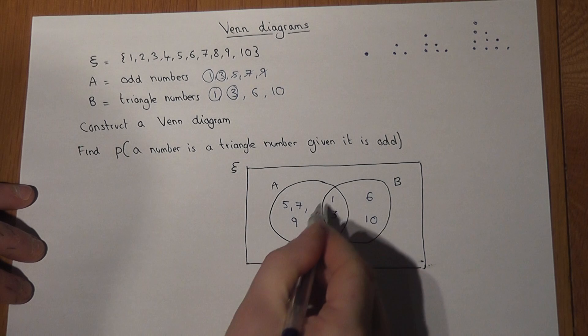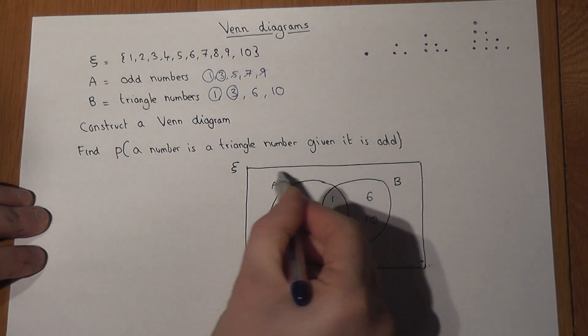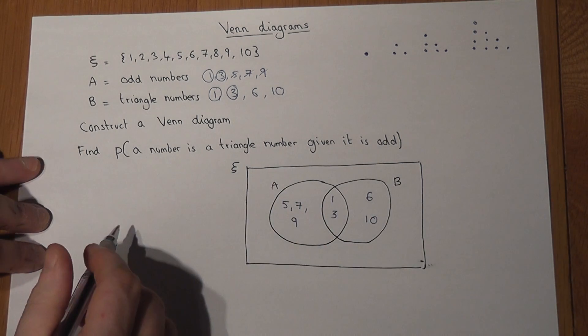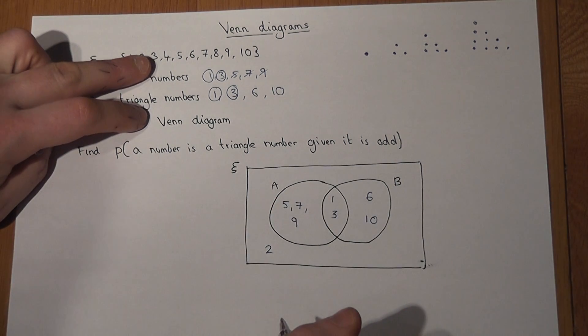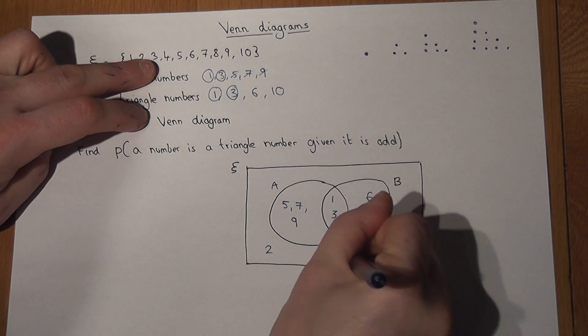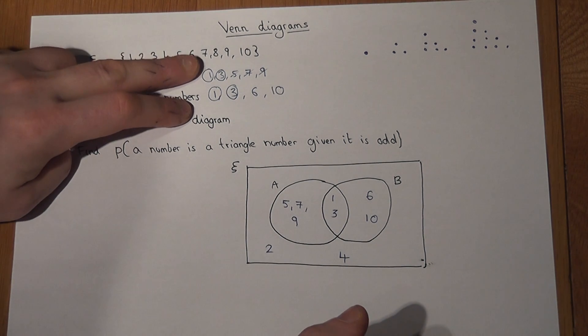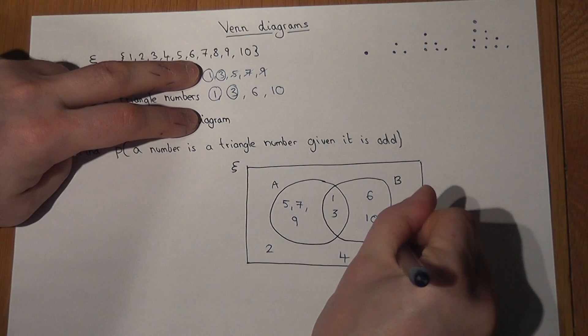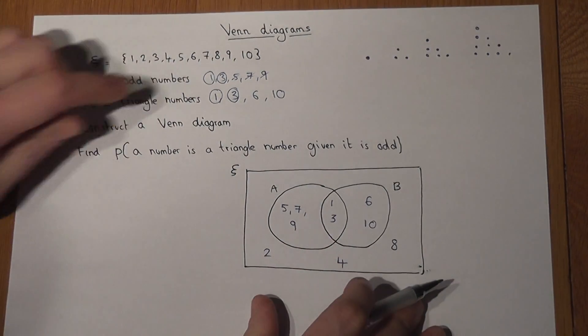So there are still some numbers that have not been used, and they go around the outside. So I've used a 1, but not a 2 yet. I've used a 3, but not a 4. The 5's been used, so is the 6, so is the 7, but not the 8. The 9 is in there, and so is the 10.